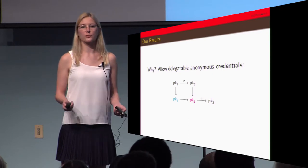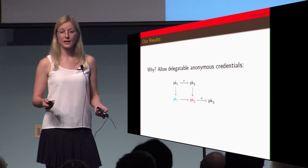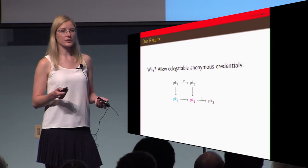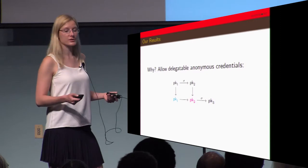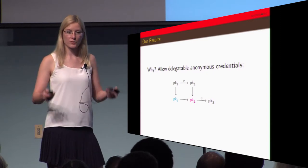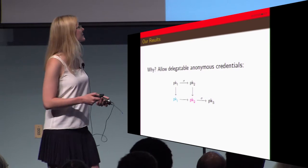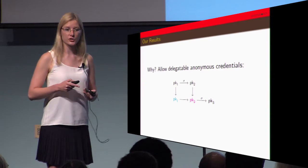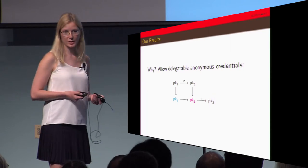Our original motivation was to construct delegatable anonymous credentials. The basic idea is that a user signs the next user's public key, and then that user can take the signature and randomize it. Everybody's acting under pseudonyms which is why it's anonymous. Through the randomization of the message and the public key you're able to achieve delegatable anonymous credentials.